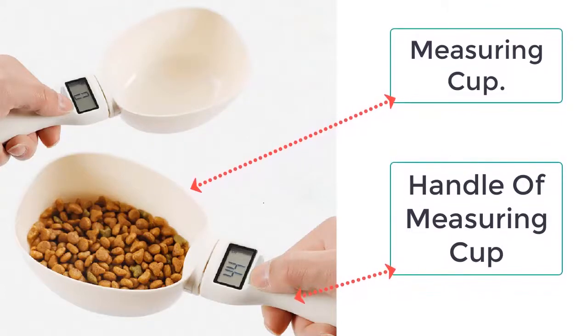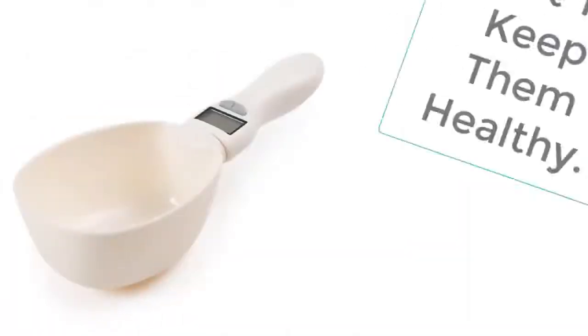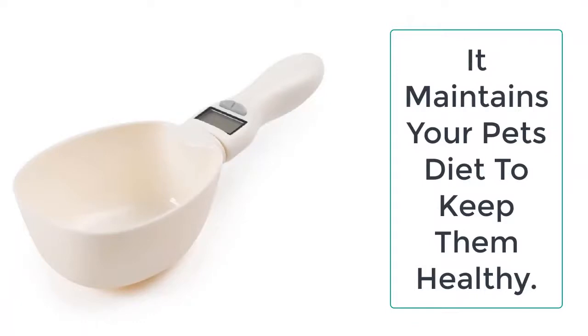The electronic scale featured on the spoon has a clear LED display. It is clearly visible and very easy to read the precise figures from the measuring cup.